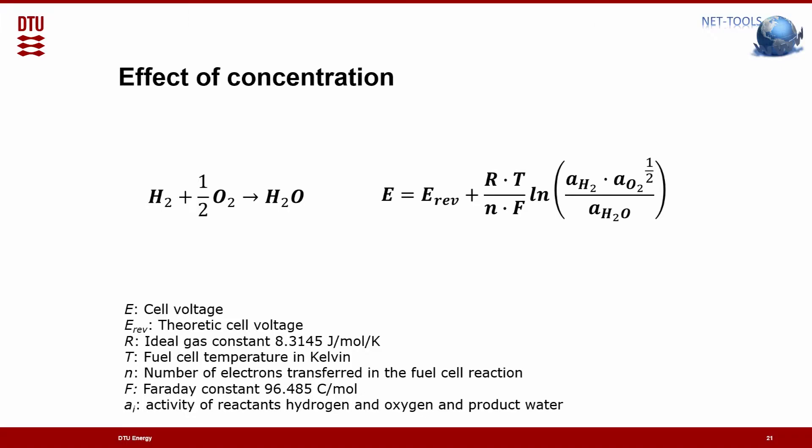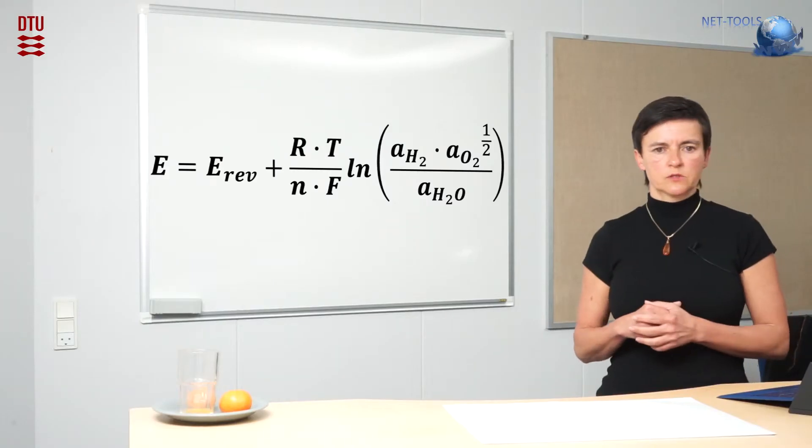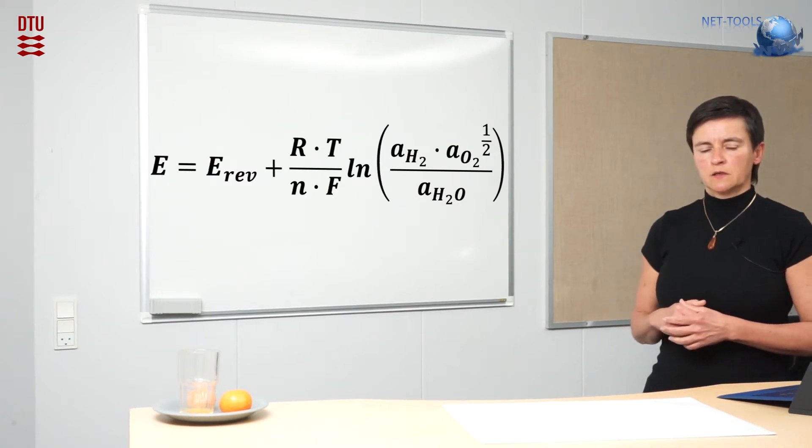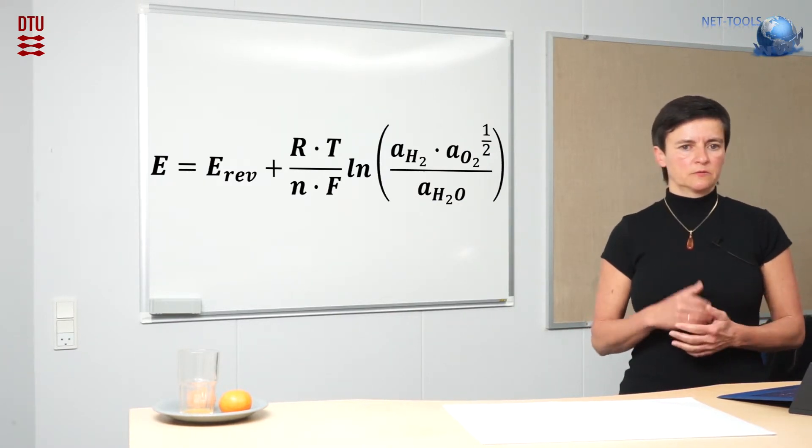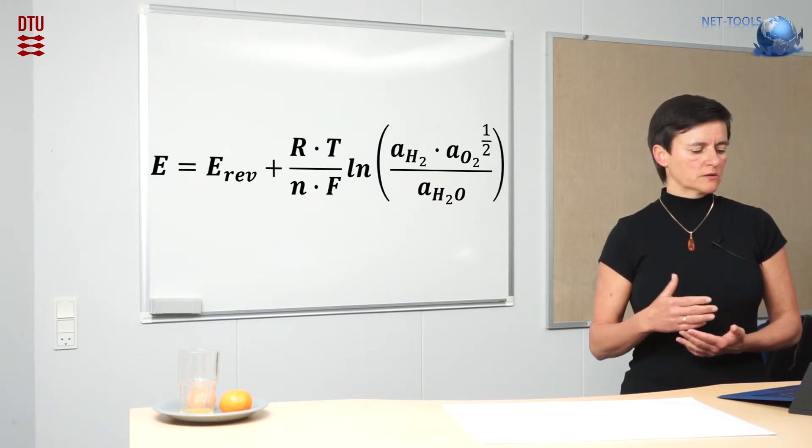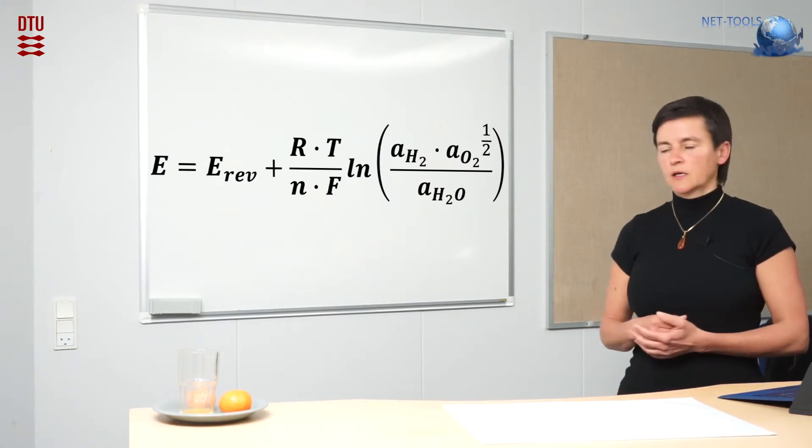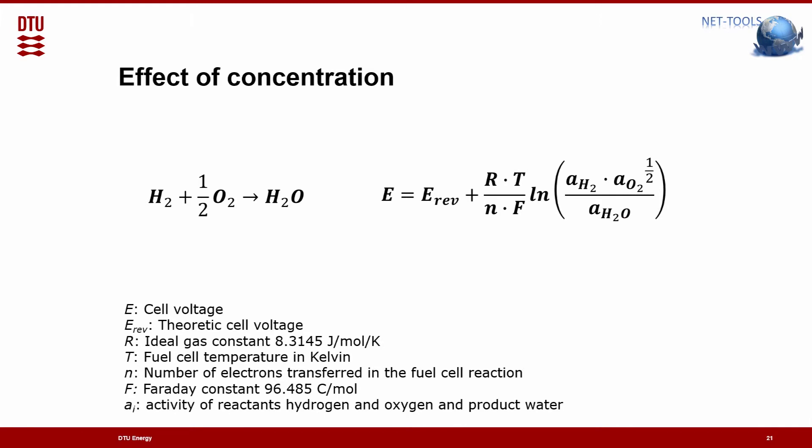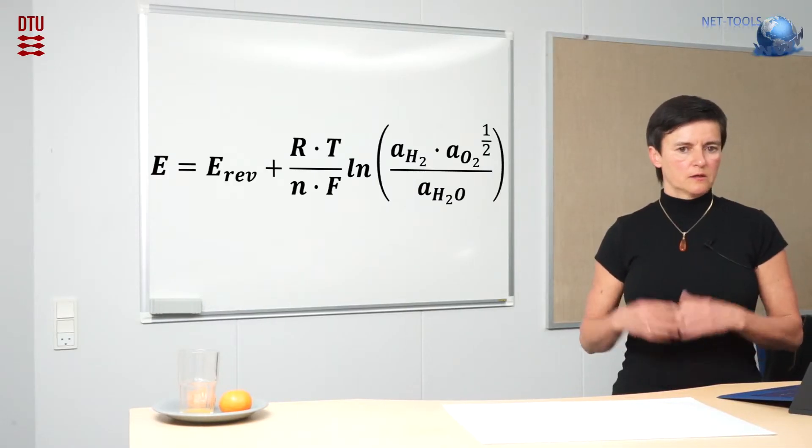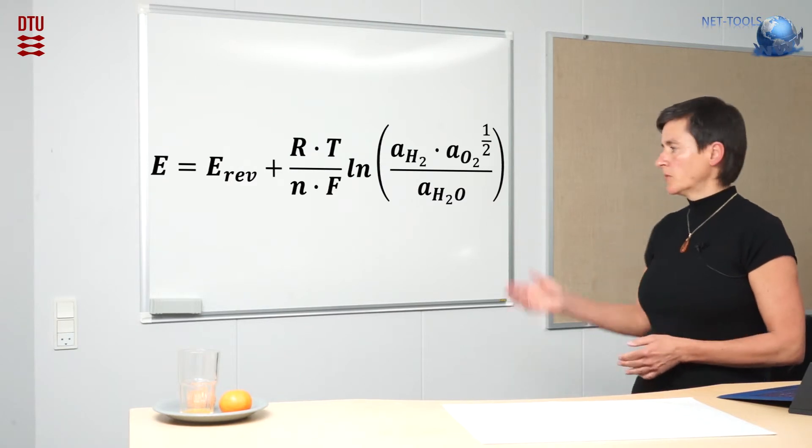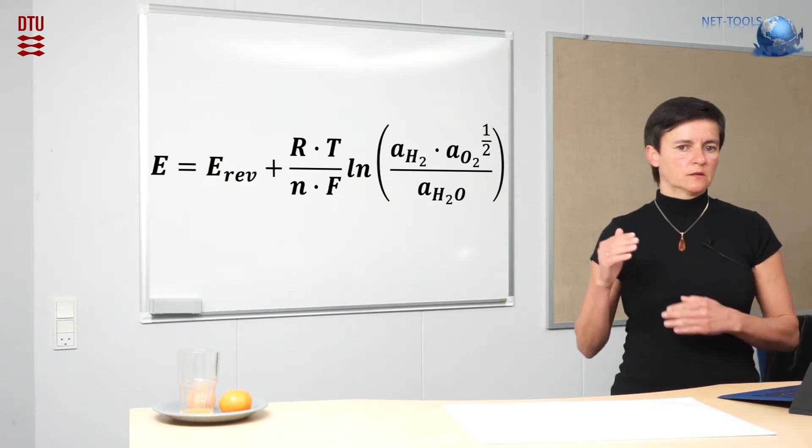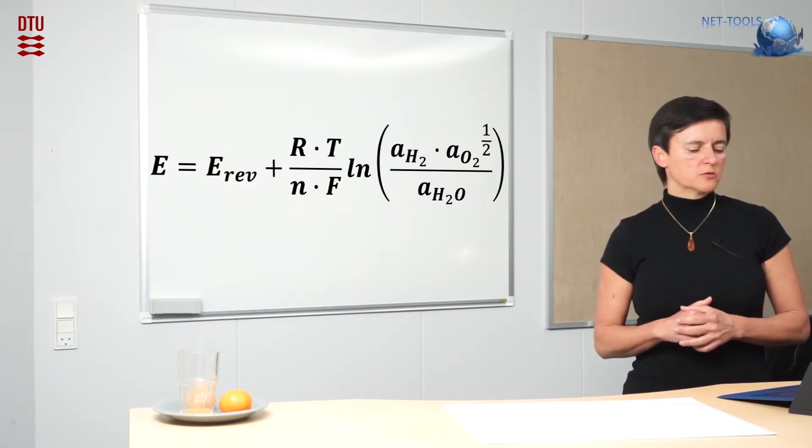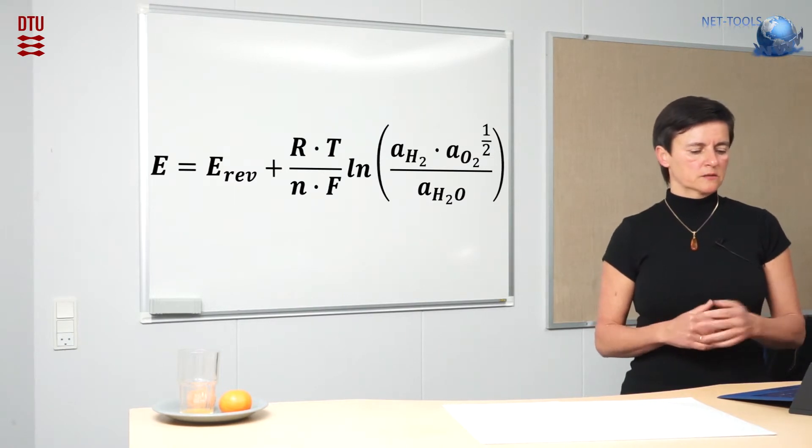We again go to the most simple case of a reaction of hydrogen with oxygen to form water. Here the effect of the concentration of the reactants - hydrogen, oxygen - and the product water can be expressed in the Nernst equation. So you have a theoretical voltage and then a term which is dependent on the correlation or the ratio between the reactants to the product.